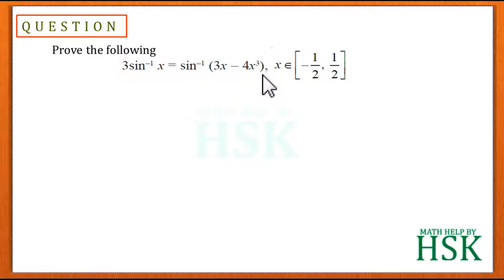to sin⁻¹(3x - 4x³) where x belongs to the closed interval [-1/2, 1/2]. This additional condition is given because this identity or equation is only valid in